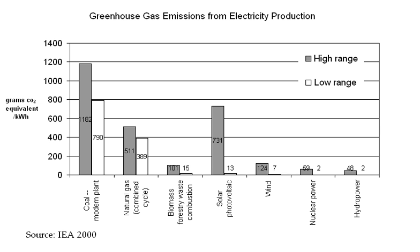Scientific analysis can provide information on the impacts of climate change, but deciding which impacts are dangerous requires value judgments. In 2010, parties to the UNFCCC agreed that future global warming should be limited to below 2.0 degrees Celsius (3.6°F) relative to the pre-industrial level. With the Paris Agreement of 2015, this was confirmed but revised with a new target: parties will do their best to achieve warming below 1.5 degrees Celsius. The current trajectory of global greenhouse gas emissions does not appear to be consistent with limiting global warming to below 1.5 or 2 degrees Celsius.